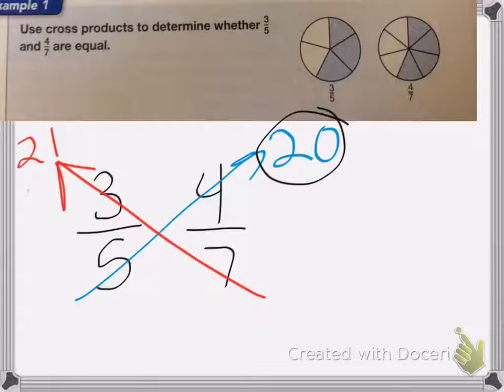And then I'm going to look at these two numbers. If they're the same, I know that they are equal, the two fractions are equal. If they're not the same, then that means they are not equal. In this case, the answers are not the same, so these are not equal.